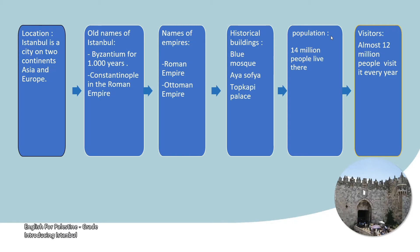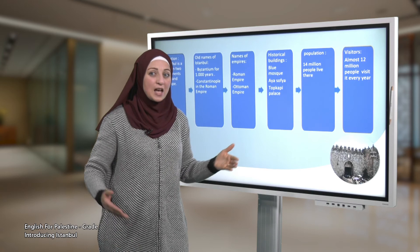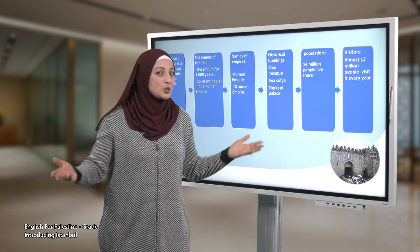Population: how many people live there? We have 14 million people living in Istanbul. As for visitors, how many visit Istanbul each year? Almost 12 million people visit Istanbul each year, which is a very large number.